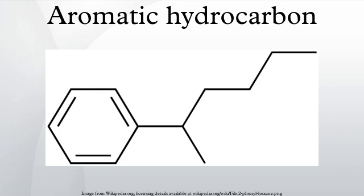Some non-benzene-based compounds called heteroaranes, which follow Hückel's rule, are also called aromatic compounds. In these compounds, at least one carbon atom is replaced by a heteroatom: oxygen, nitrogen, or sulfur. Examples of non-benzene compounds with aromatic properties are furan, a heterocyclic compound with a five-membered ring that includes an oxygen atom, and pyridine, a heterocyclic compound with a six-membered ring containing one nitrogen atom.